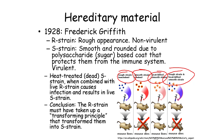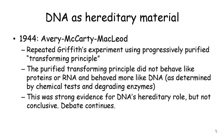He did not really characterize what this material was and called it the transforming principle. In 1944, a group of scientists repeated Griffith's experiment to find out what the transforming principle was. They again killed the smooth strain bacteria with heat treatment and applied different purification methods. For each of the resulting material, they tested whether the material was still able to transform the rough strain bacteria and make it virulent.